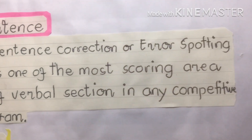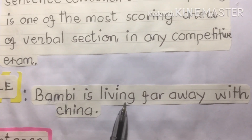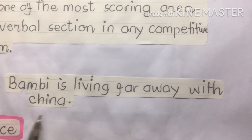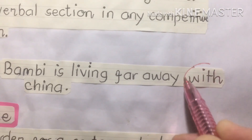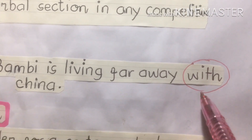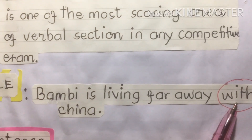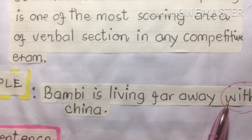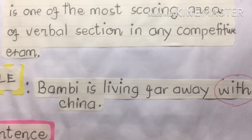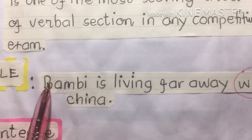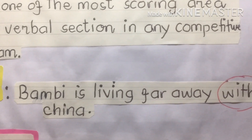Here is one example: 'Bambi is living far away with China.' Where is the error? The word 'with' is the incorrect one. Why? 'With' is not the right word here. Instead of 'with,' you can use 'from.' We are going to take these incorrect sentences and write the correct ones.